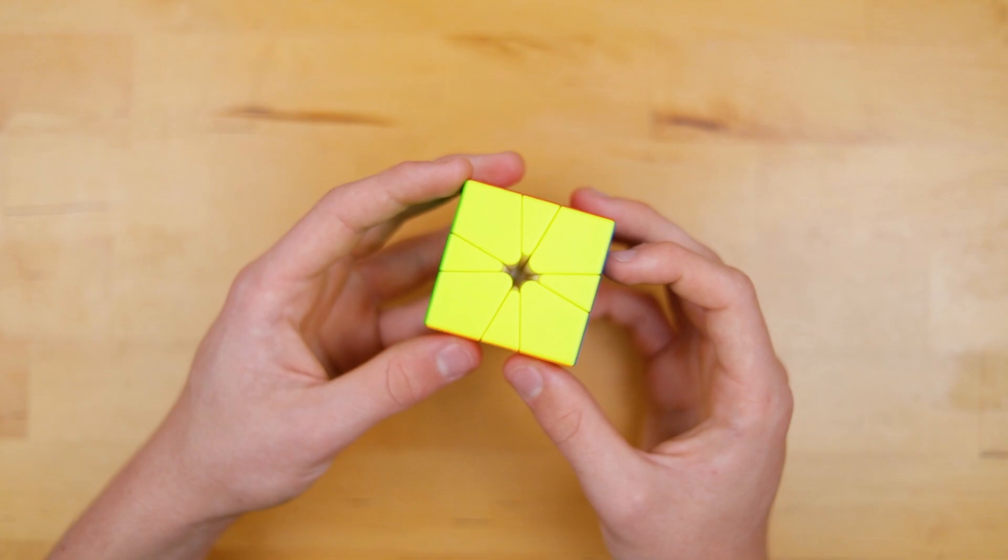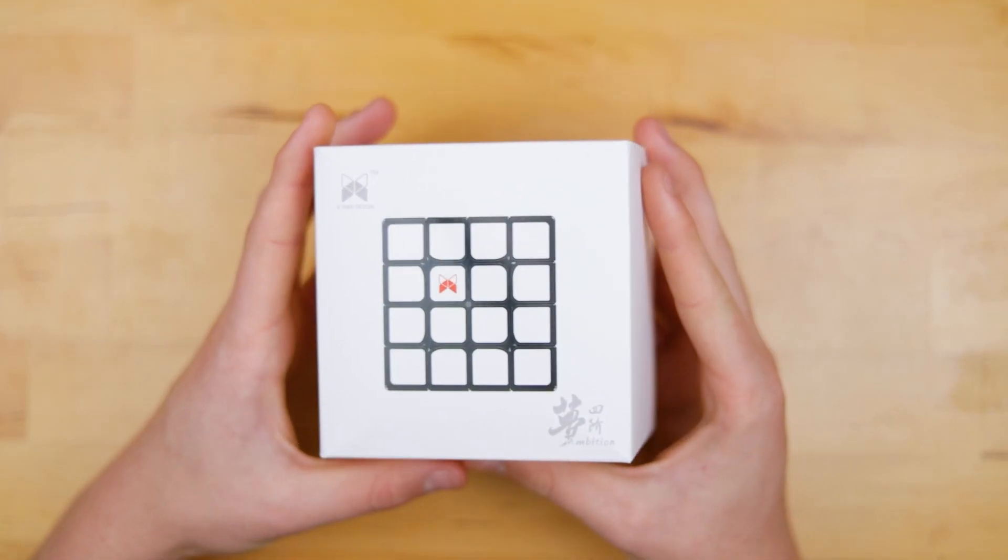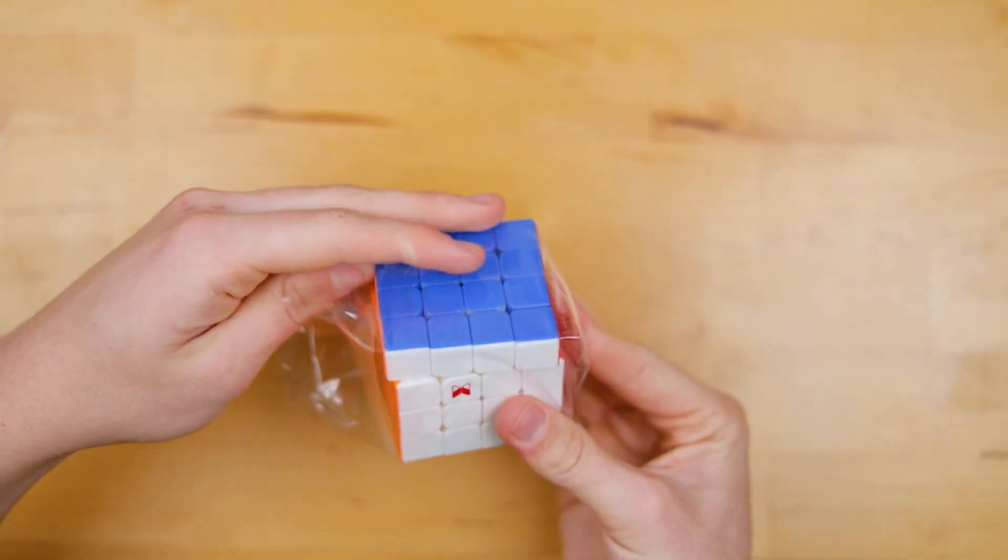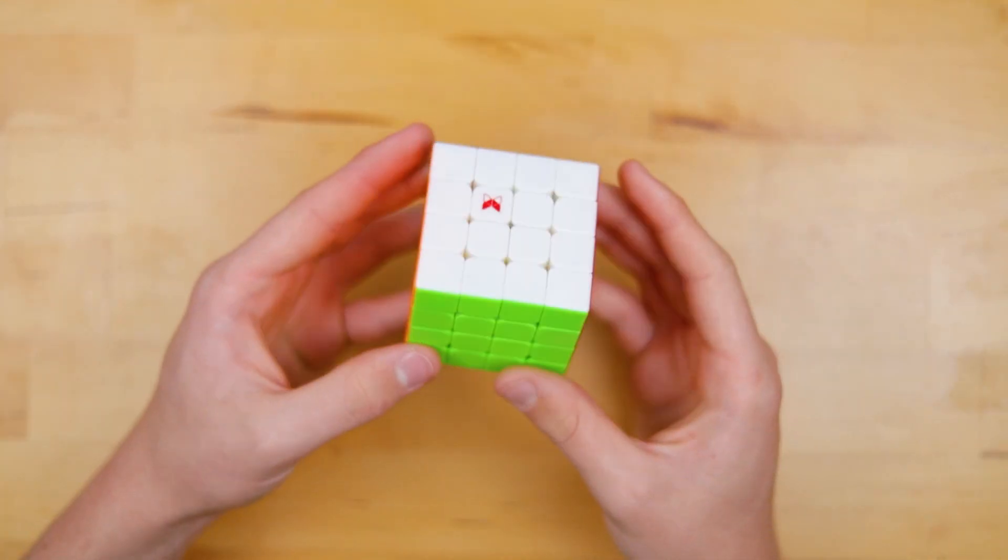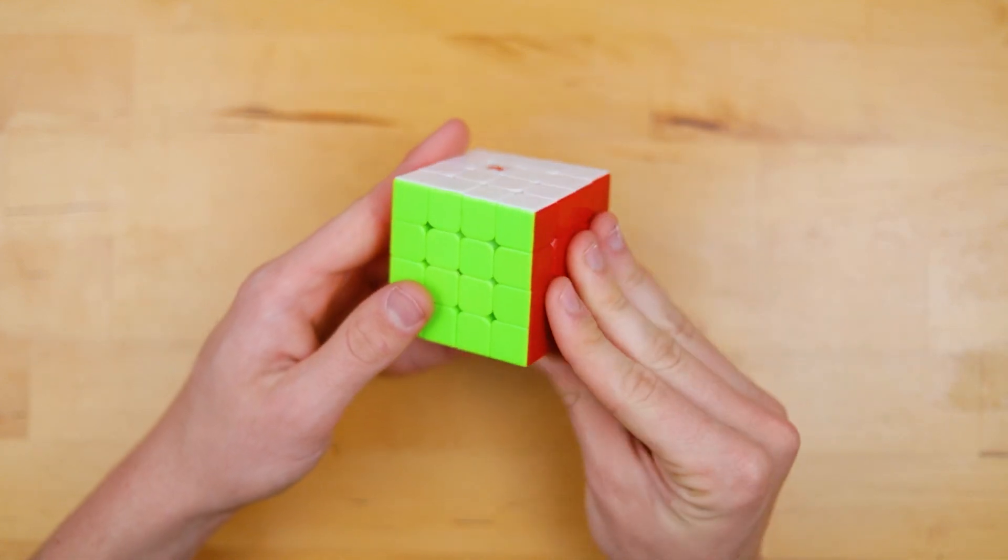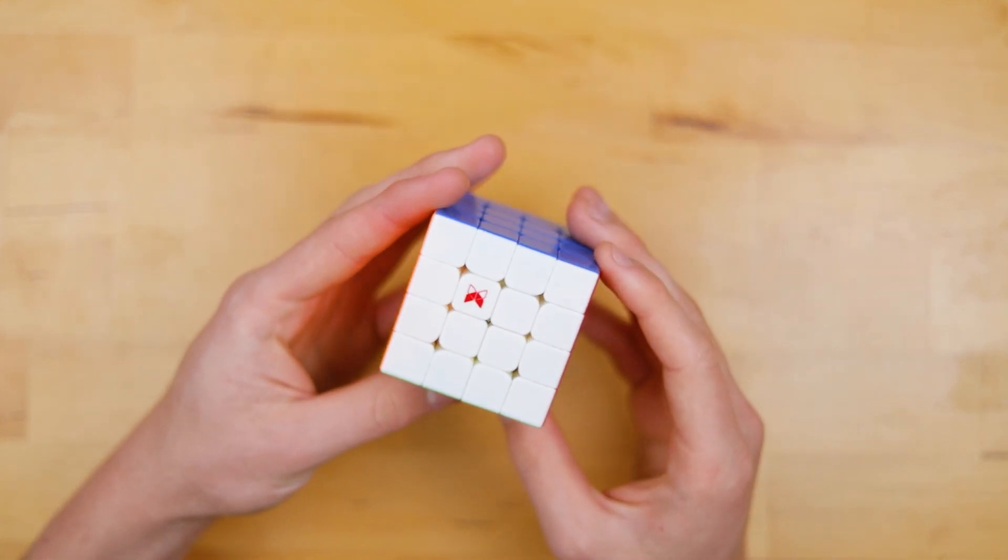Next we have QiYi's new X-Man Ambition 4x4. Oh no, I'm getting Volk 4 vibes. I do not like this. I believe off the top of my head this cube is about, you know, like 30 US or 40 Australian, so it's definitely up there as a flagship and let's see how it turns.